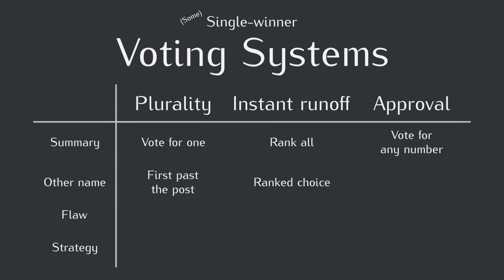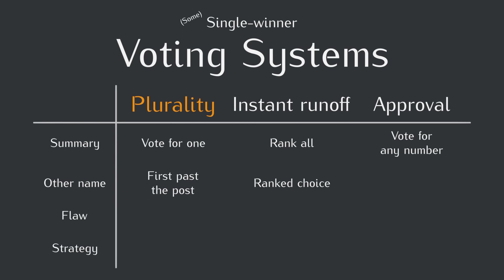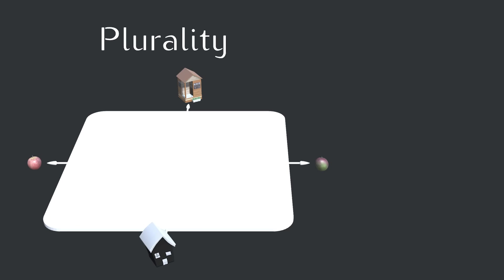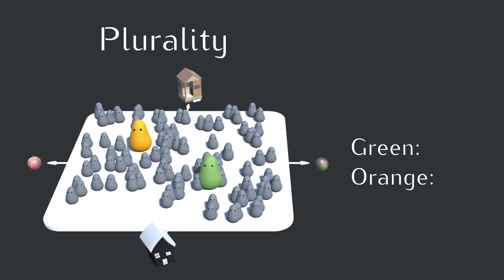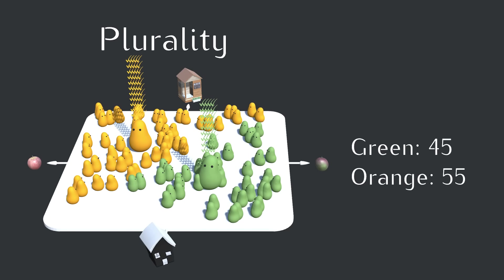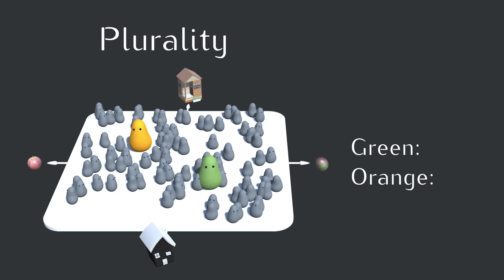Okay, so now we can look at the plurality system. This is the one where each voter votes for exactly one candidate, and the candidate with the most votes, or the plurality, wins. All right, let's run our first election. In this case, orange beats green. Great. This system works just fine when there are only two candidates or parties. And sure, there will be some disagreement, but it's hard to think of anything that could be more fair than just seeing who most voters prefer.